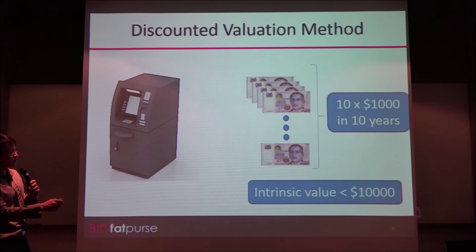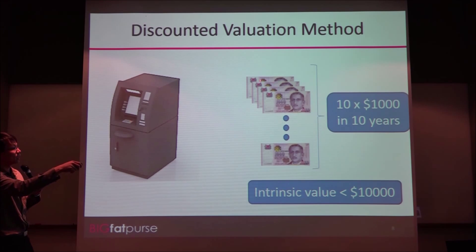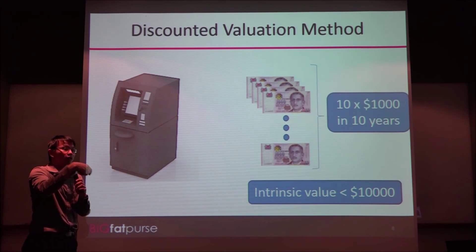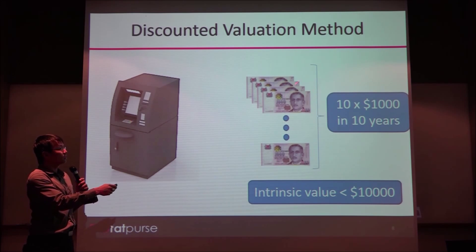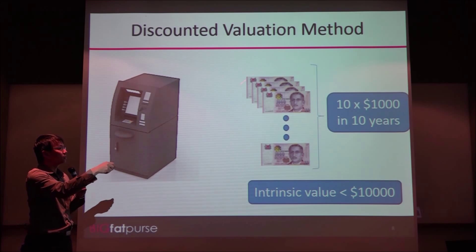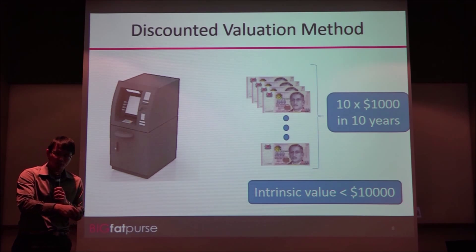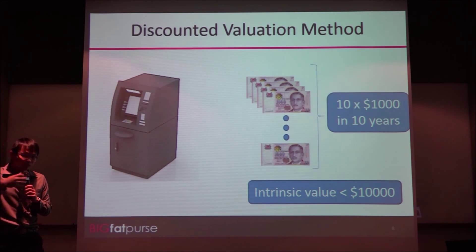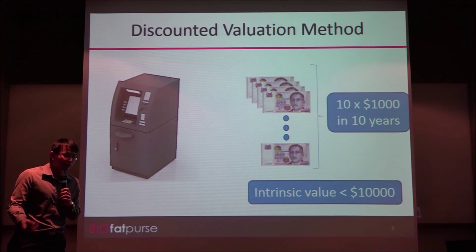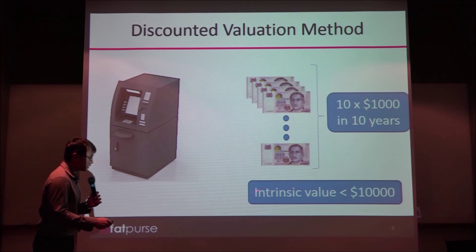You can actually think of this as a company. The cash machine is the company, and the cash it gives you is the dividend, the earnings, or the cash flow. So you discount the future earnings to the current value, which is the intrinsic value. This is the concept of discounting future earnings — the discounted method.